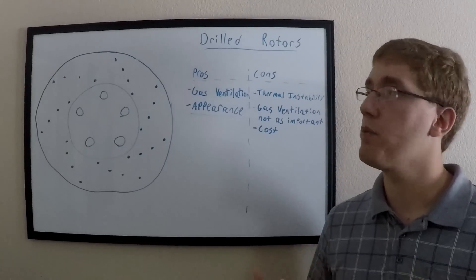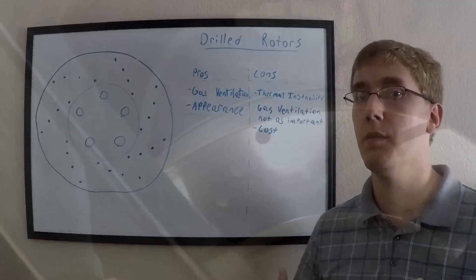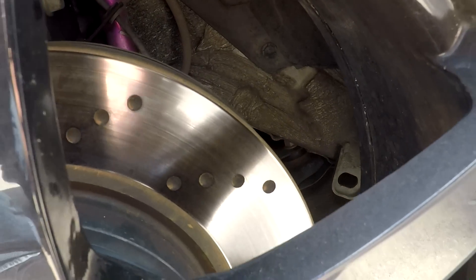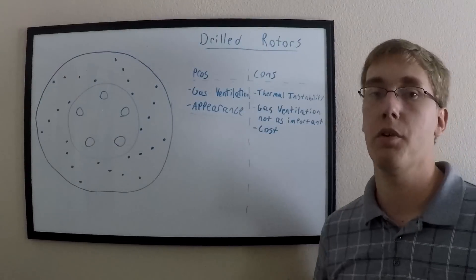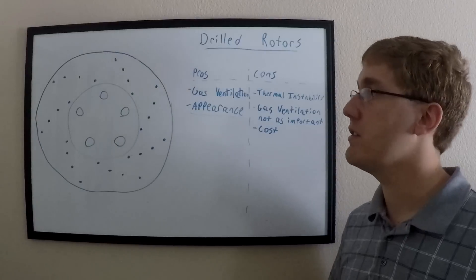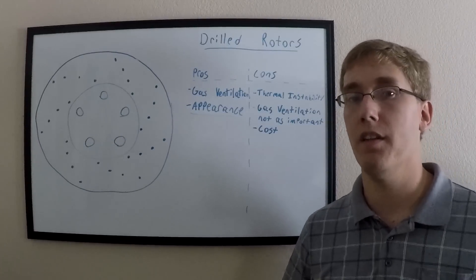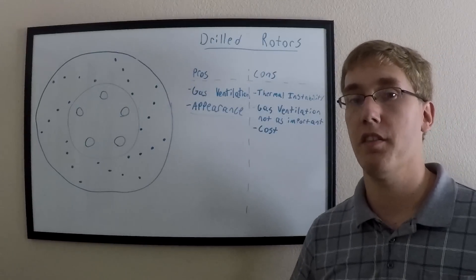A modification to the drilled rotor that helps address some of the issues with it is the dimpled rotor. A dimpled rotor looks a lot like a drilled rotor, but instead of drilling holes completely through the disc, you're only drilling them part of the way, which gives it the appearance of a drilled rotor while still maintaining the structural integrity of the disc. However, they're still not as effective as some of the other rotor designs.